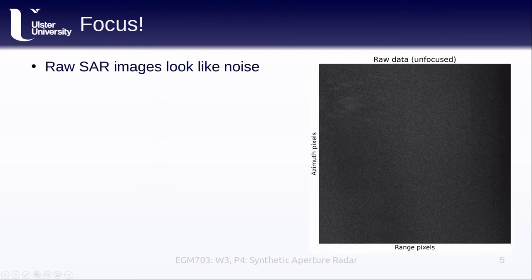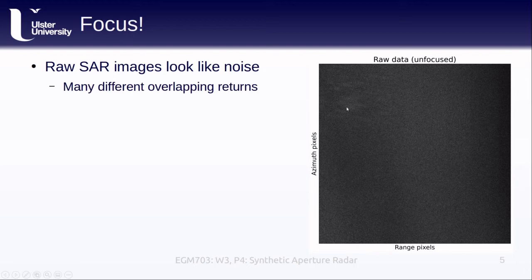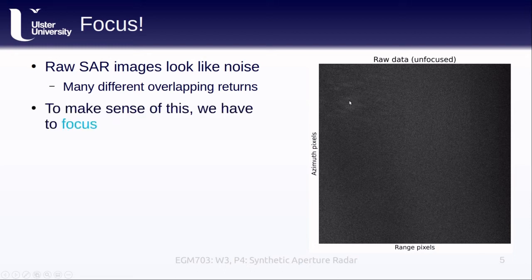Unfortunately, when the signal measures all of these different returns, the resulting image looks like noise — lots of different overlapping returns that interfere with each other in a mostly random way. To make sense of it, we have to focus. The first step is range compression, where we correlate or convolve the measured signal with the signal that we sent out over the range direction of the image.